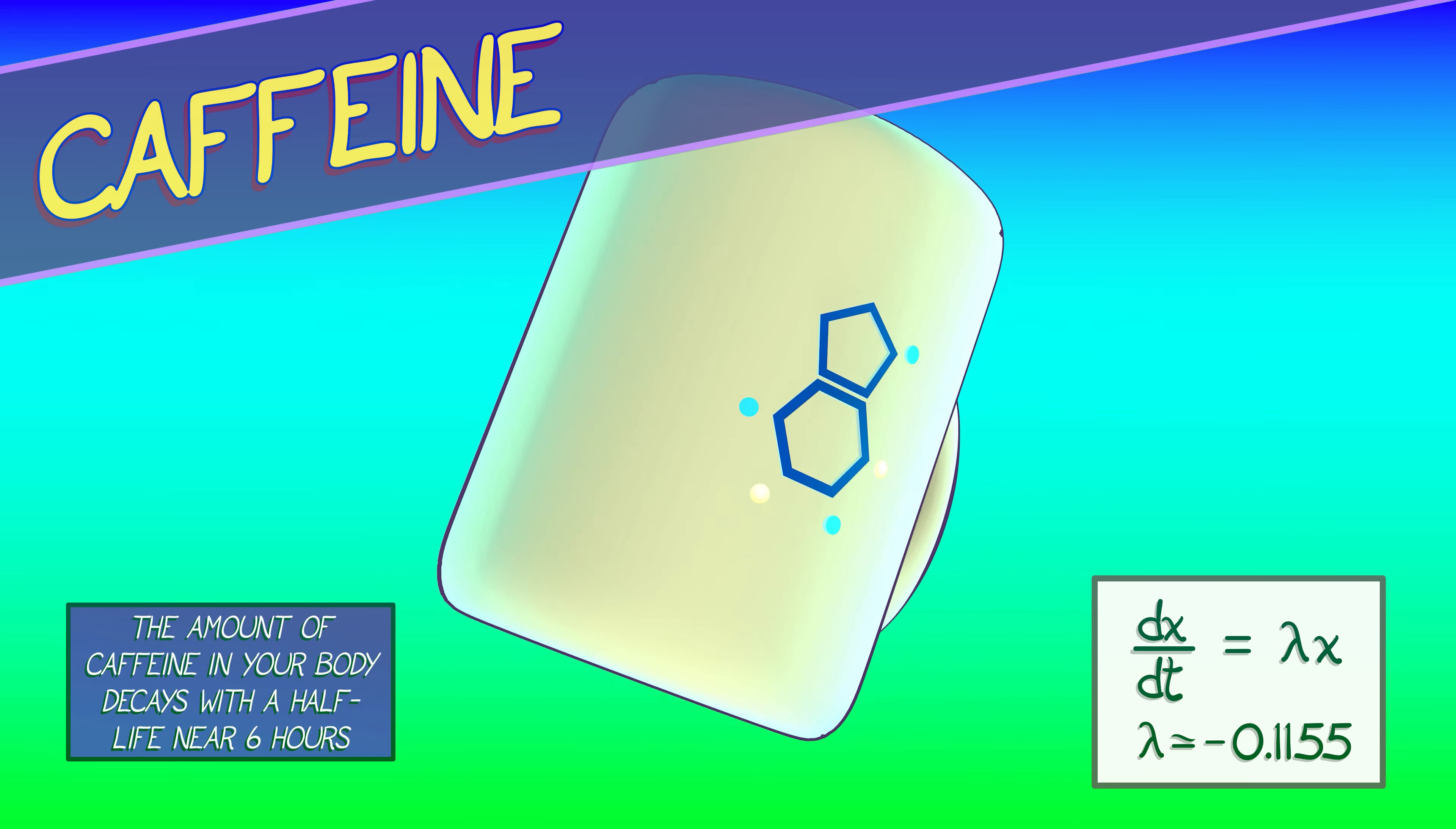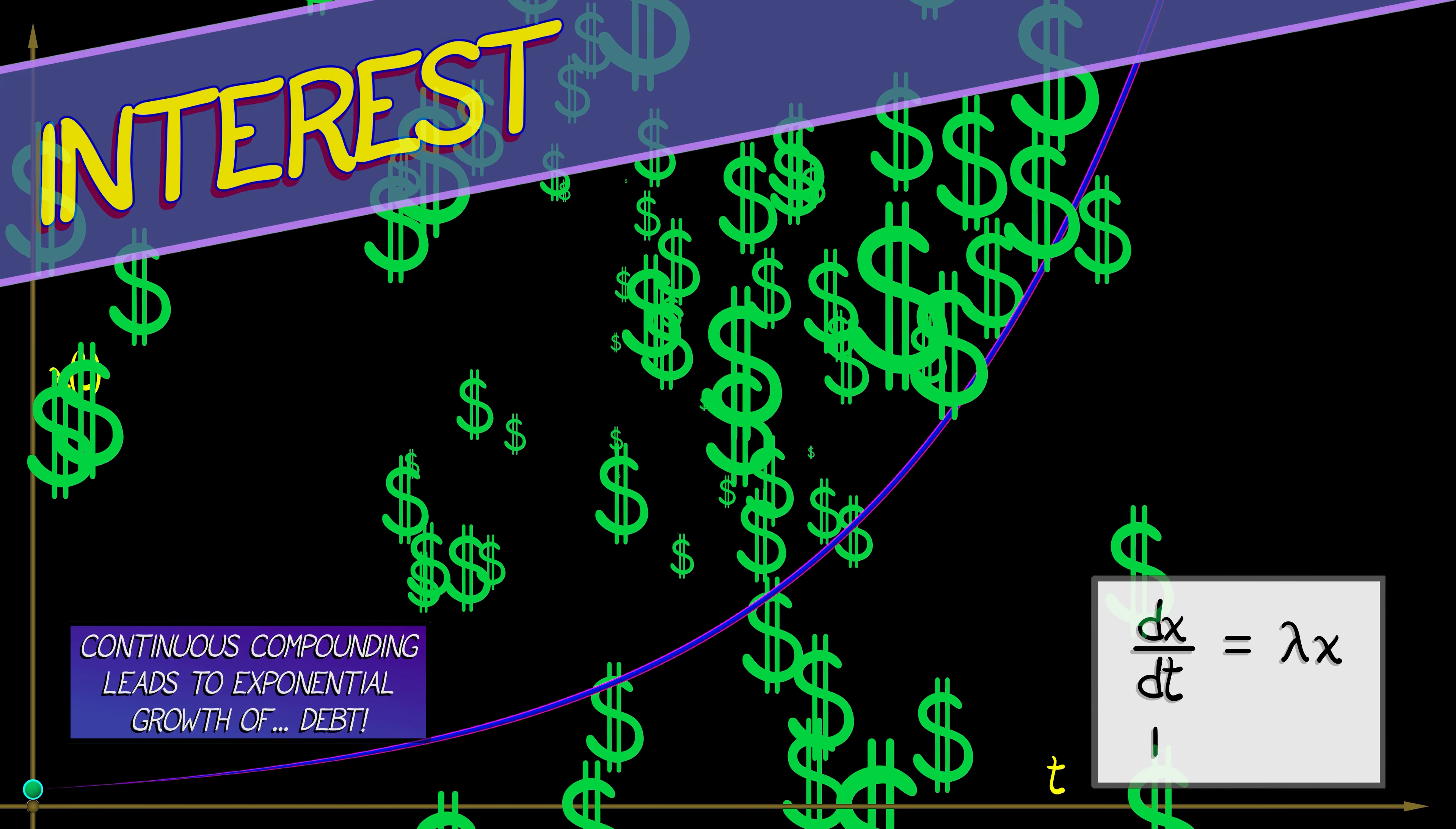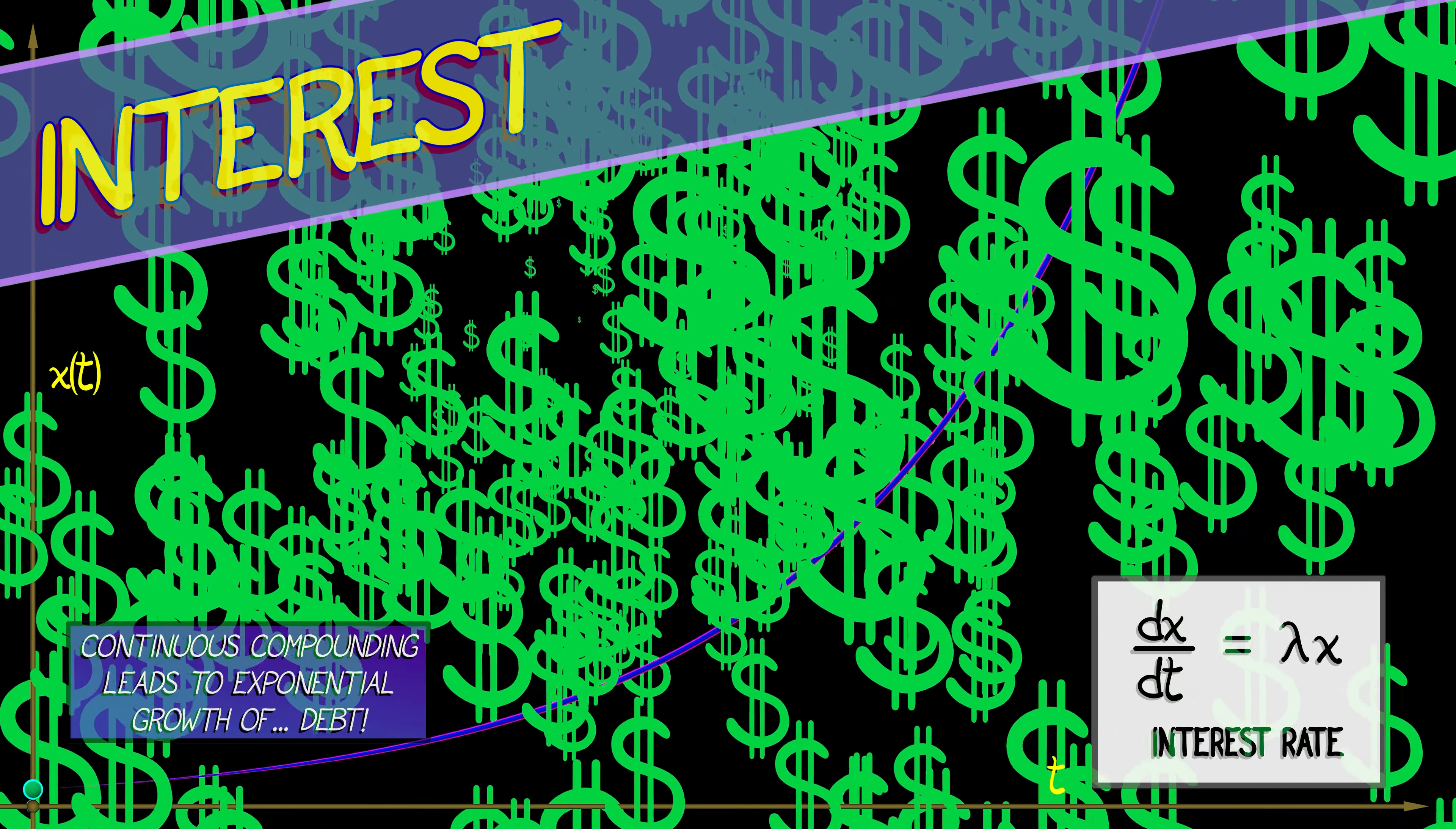There's more than radioactive caffeine in the world. There's also money and interest, which compounds continuously, leading to exponential growth of things like debt. If x is the amount of money you owe, dx/dt equals lambda x, where lambda is the interest rate. So if you don't pay that debt off, it grows exponentially.